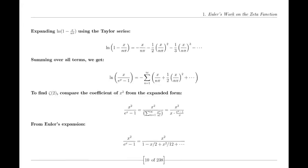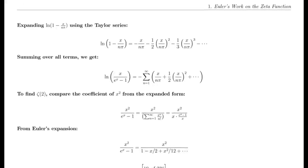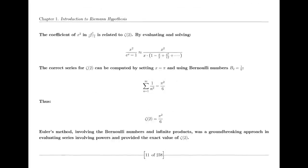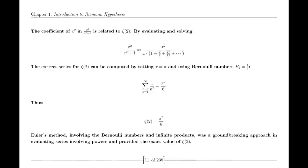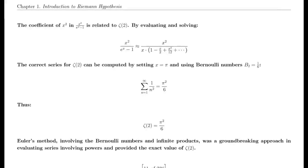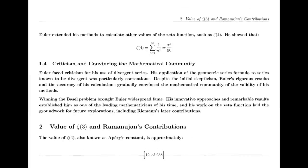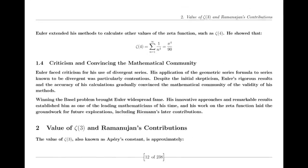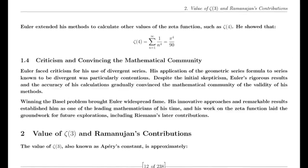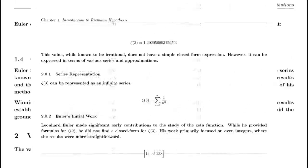The functional equation of the zeta function relates its values at s and 1 minus s through a complex expression involving π, the Gamma function, and trigonometric functions. This equation is a key result in the theory of the zeta function, showcasing its symmetry and the deep relationships between different mathematical concepts.